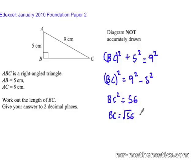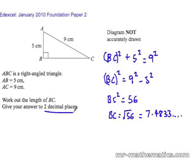So BC is 7.4833 approximately. Now to two decimal places, BC is about 7.48, where 8 is the second decimal place.